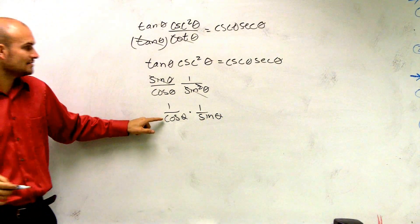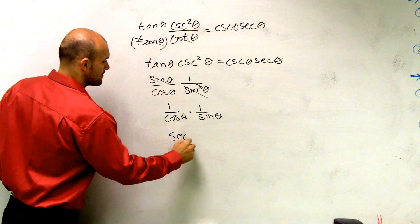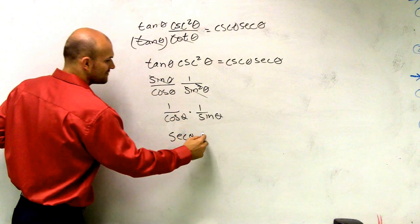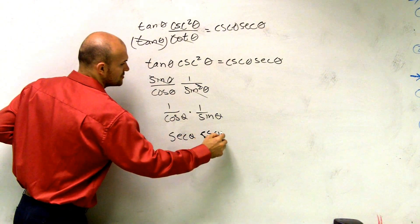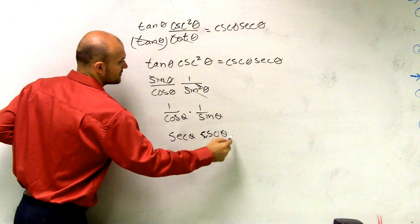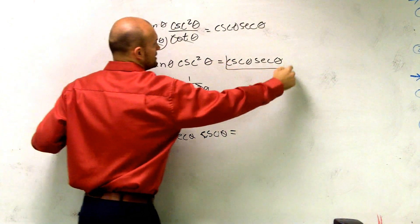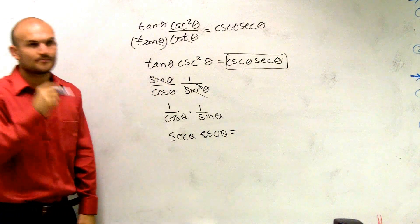Well, 1 over cosine theta is going to equal secant theta. 1 over sine theta equals cosecant of theta, which equals the right side. Yes?